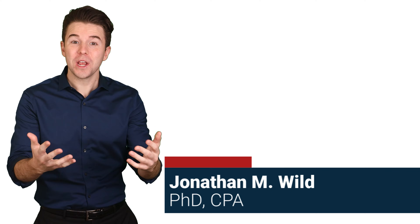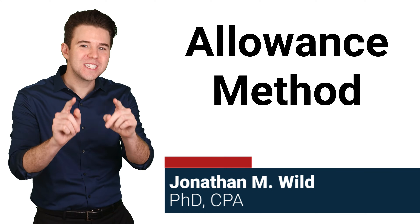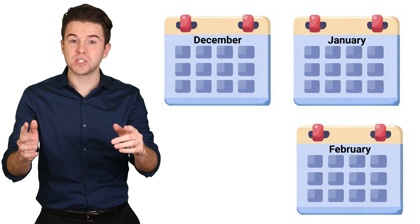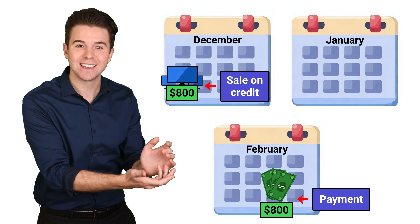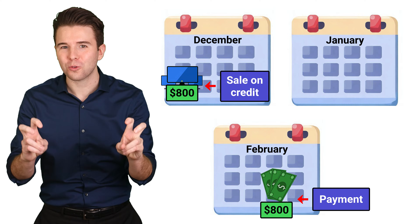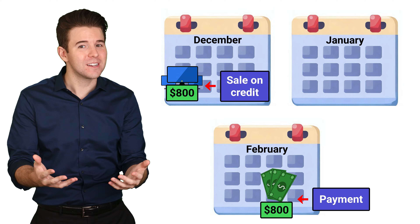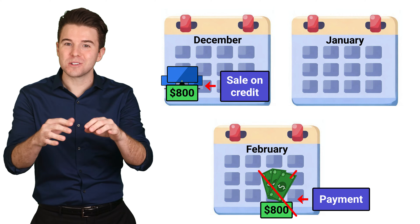Hey, I'm Jonathan Wild, and we are going to cover how to use the Allowance Method. Now, it's common in business to allow customers to pay for products or services at a later date, called selling on credit. Unfortunately, some of those customers won't pay us back. Using the Allowance Method, we estimate these losses from uncollectible accounts and record bad debts expense at the end of the accounting period.